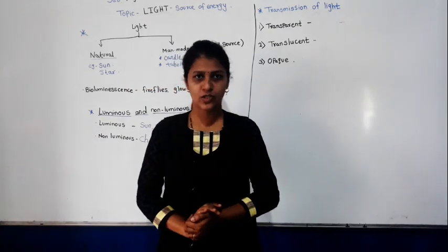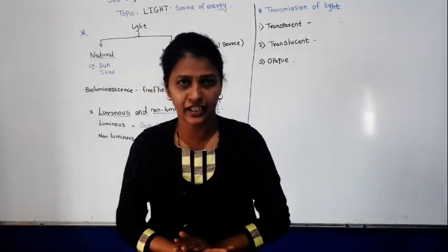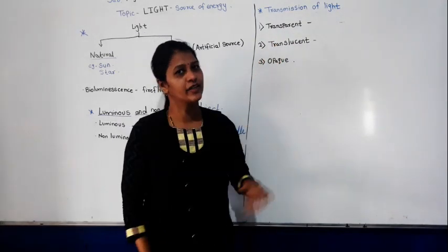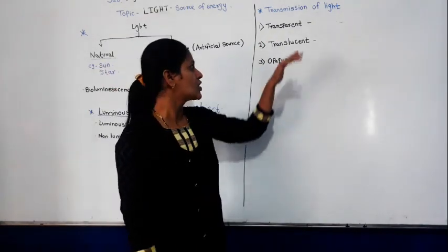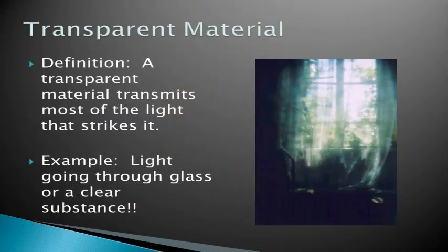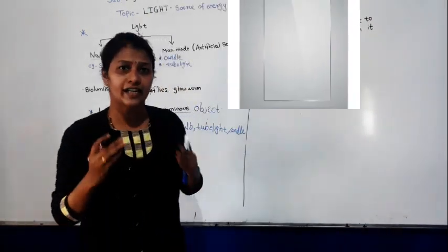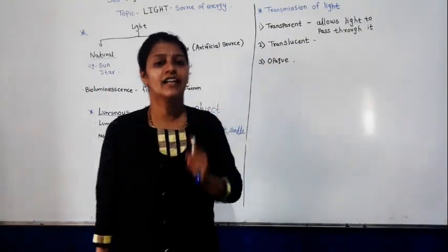Transmission of light means how light is transferred — transmitted. There are mainly three types of material you can see in day-to-day life: transparent, translucent, and opaque. What is meant by transparent? Transparent means the material through which light can pass — the material which allows light to pass through it. For example, glass. Glass allows light to pass through it, so it is called a transparent material.